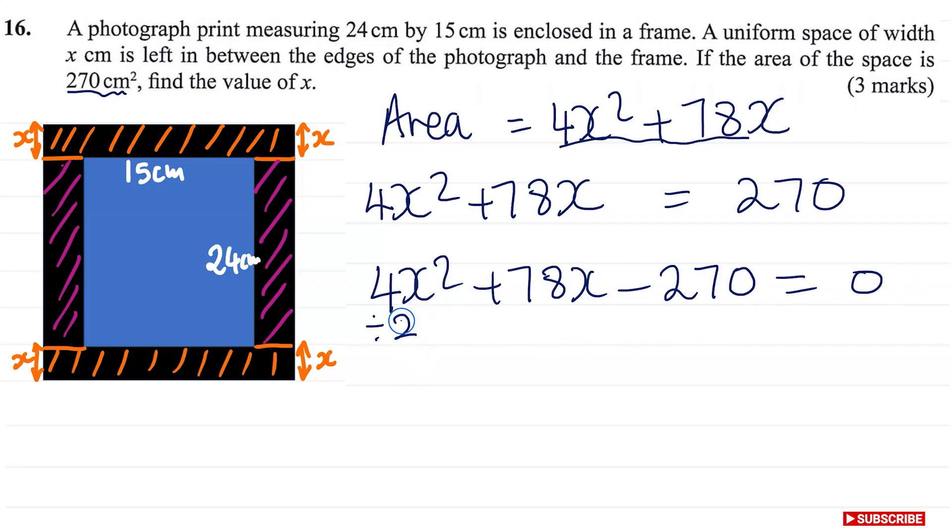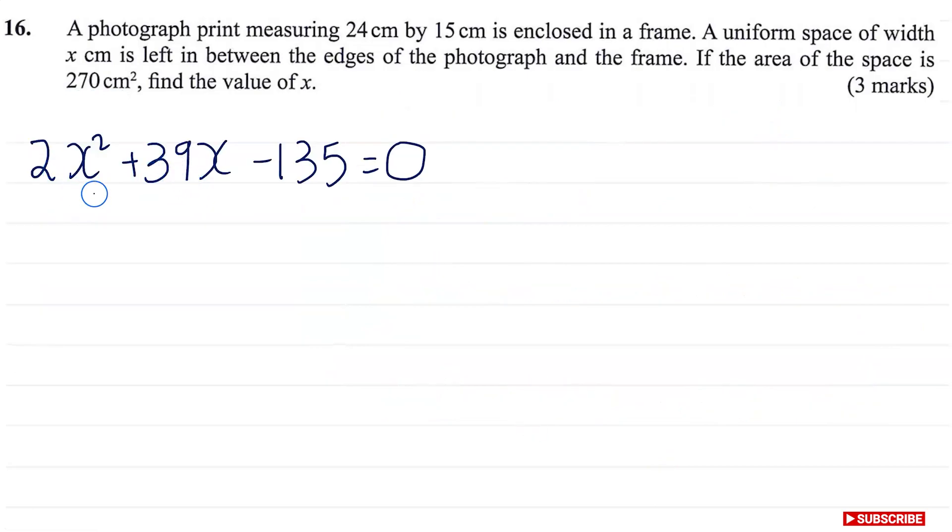Now we can see all the numbers here are divisible by 2. So we're going to divide by 2 throughout. So 4x² divided by 2, this is going to give us 2x² plus 78 divided by 2, that's 39x minus this divided by 2 is 135. Everything is equal to 0 divided by 2 is just 0. So now we have formed our quadratic equation.